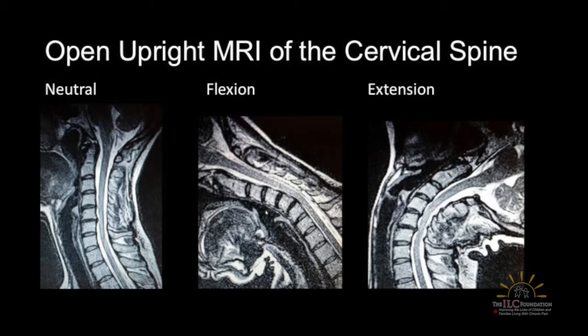This is a 40-year-old who has had a number of examinations and was called normal, but she's really pretty disabled. In neutral position, there's a small bulge at C5-C6 that doesn't really indent the cord much. When she bends forward, there's 29 degrees of angulation from neutral to flexion. And when she bends backward, she has a disc bulge and the cord is squashed or pressed upon.